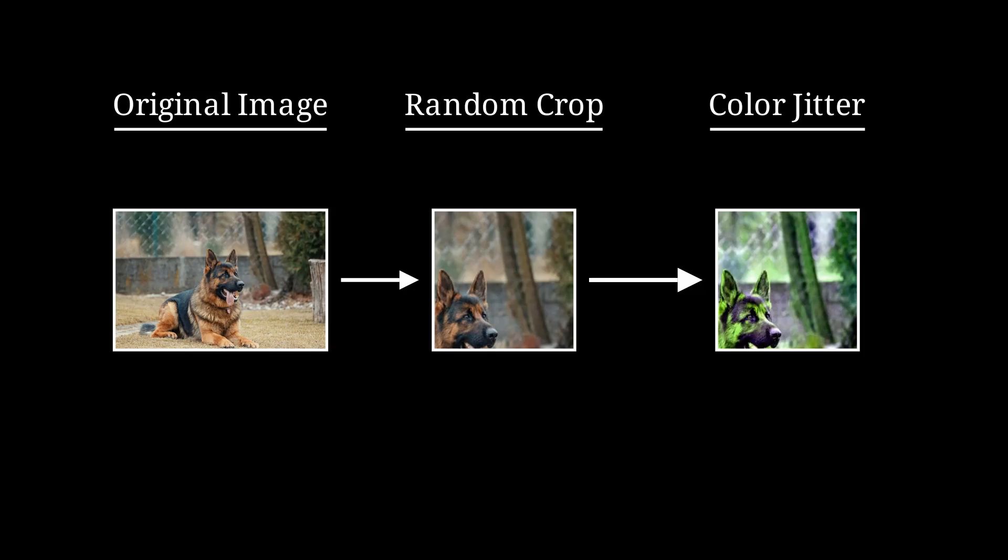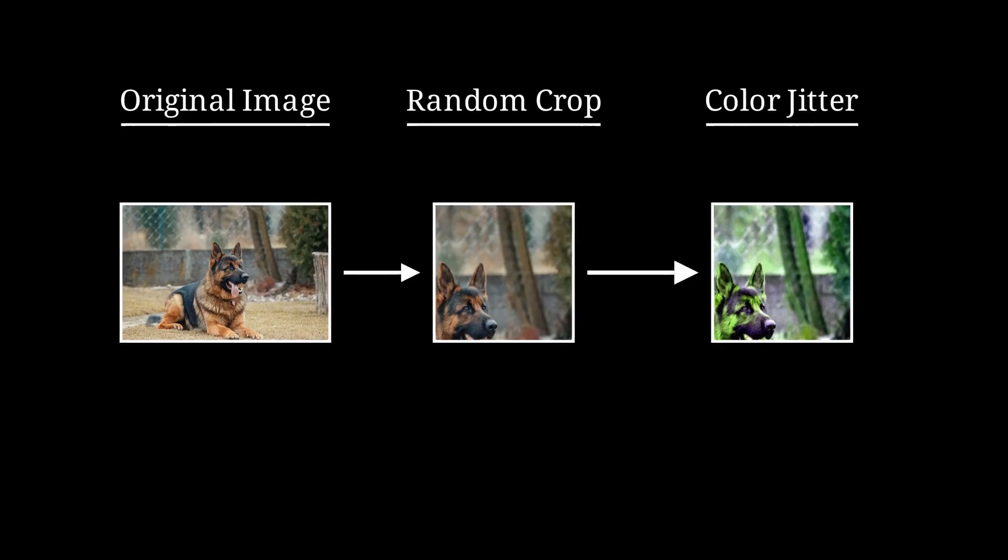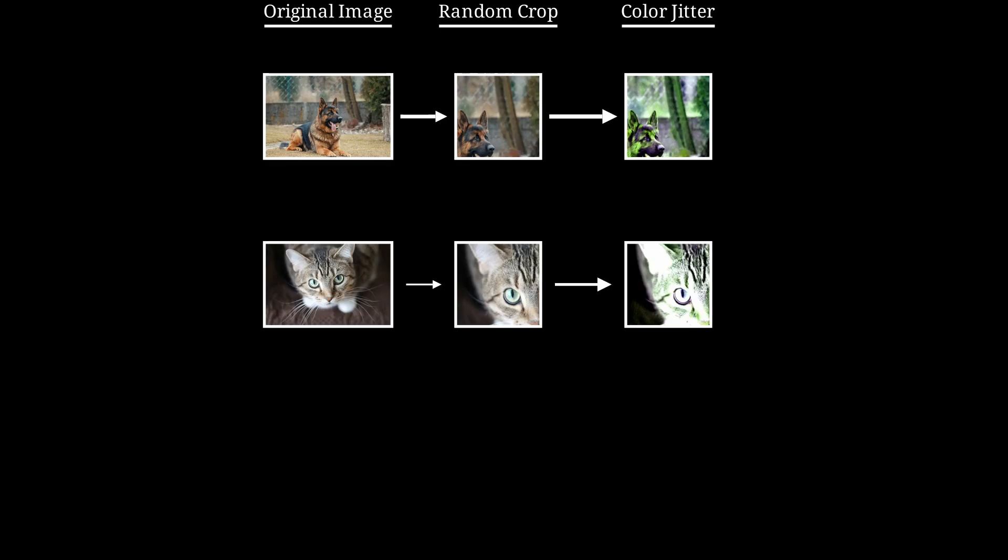Despite their visual differences, both views still represent the same object, so the model learns to generate similar representations for them. For the negative pairs, SimCLR selects another image from the same batch and applies the same augmentation process.